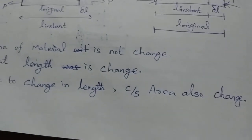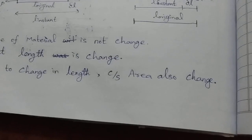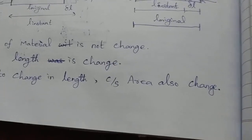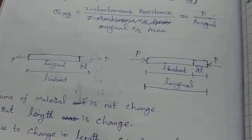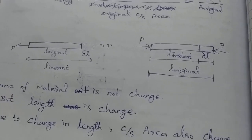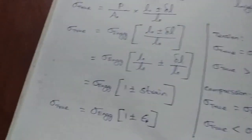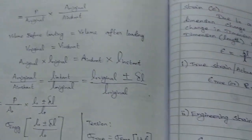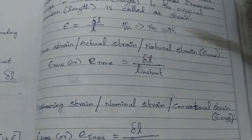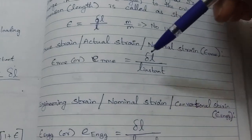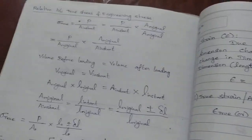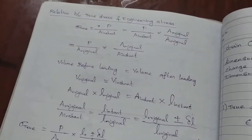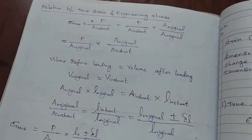Due to change in length, the cross-section area also changes. When the length changes, the volume of the material may also change. This distinction relates to true strain versus engineering strain, and true stress versus engineering stress.